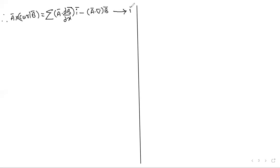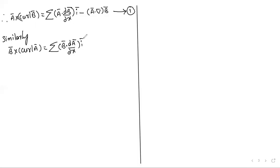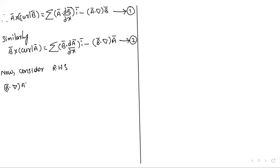Similarly, B̄ cross curl(Ā) can be derived. Now consider the right-hand side: B̄·∇Ā plus Ā·∇B̄ plus B̄ cross curl(Ā) plus Ā cross curl(B̄).